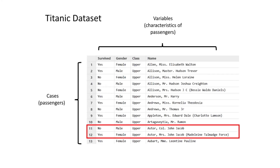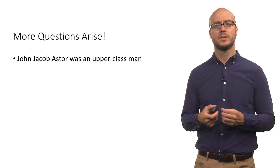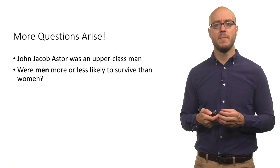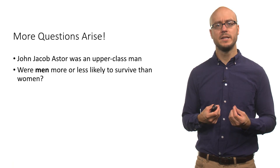Let's look at rows 11 and 12. You can see that we have John Jacob Astor and his wife in those two rows. In the survived column, you can see that John Jacob Astor didn't survive, but his wife did.